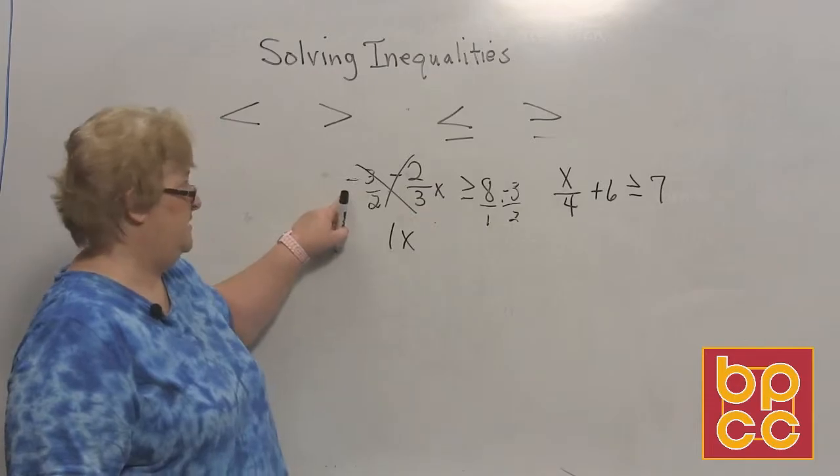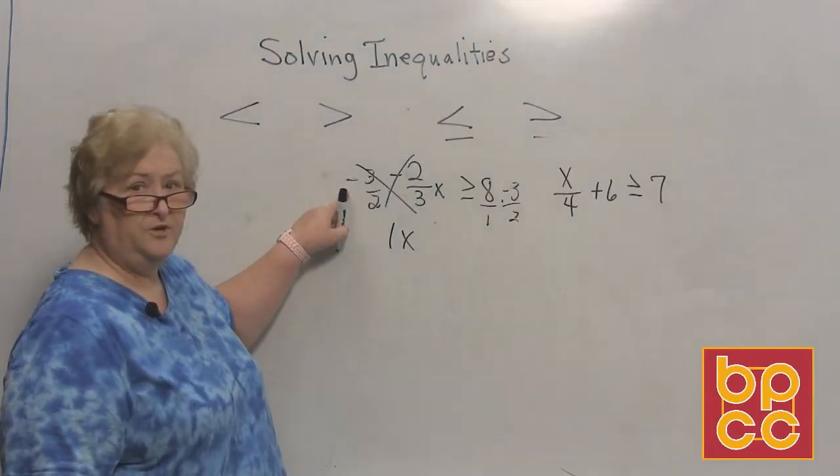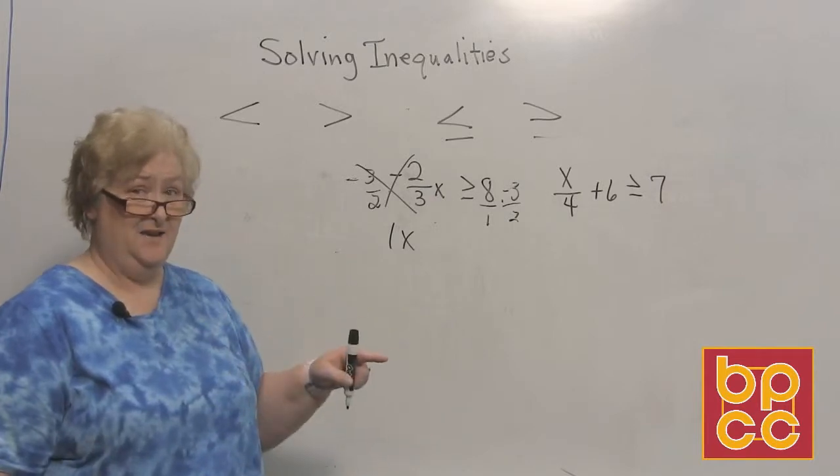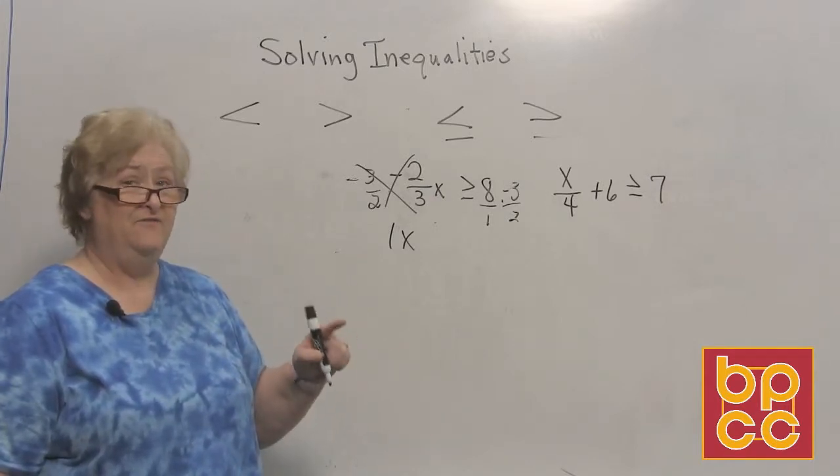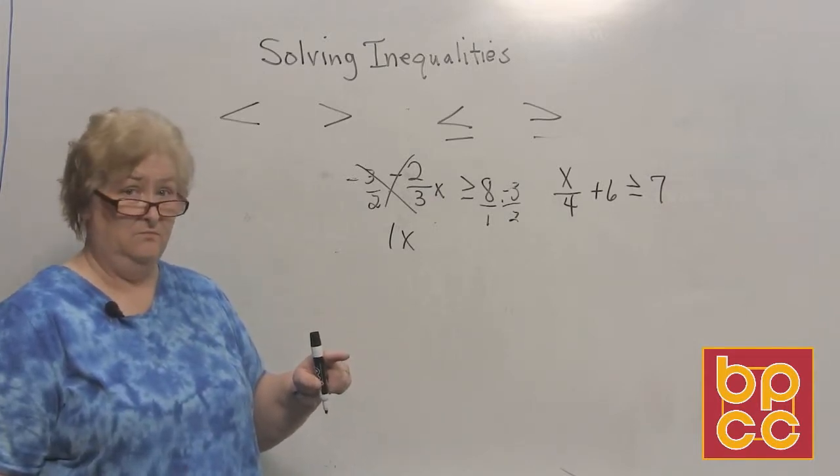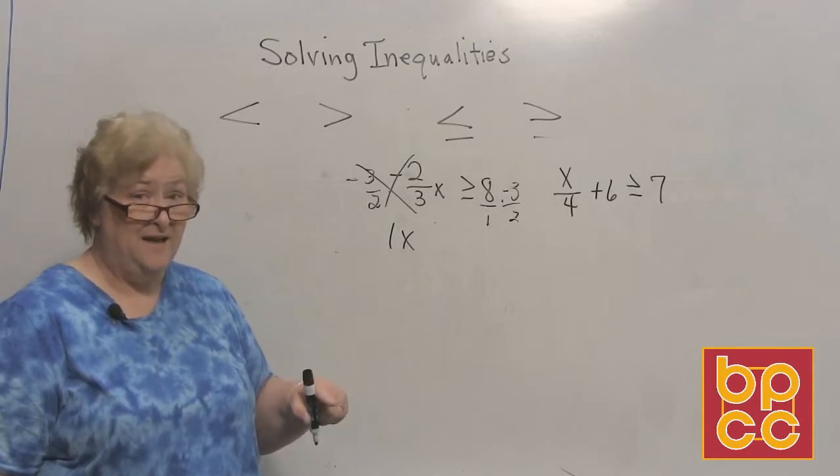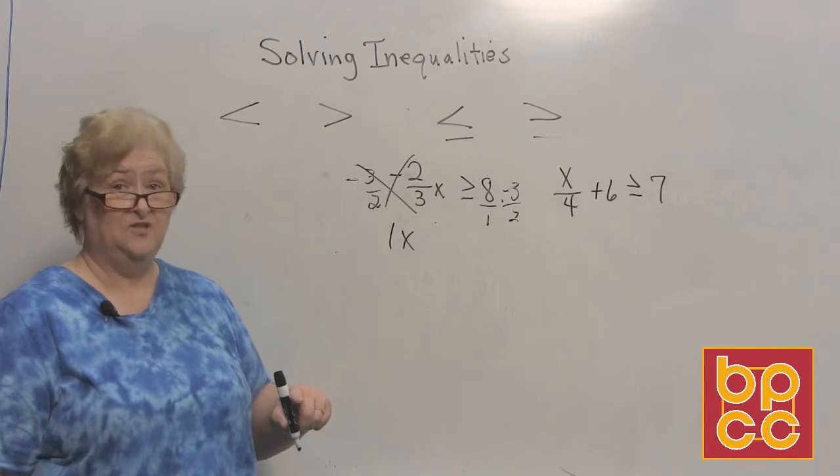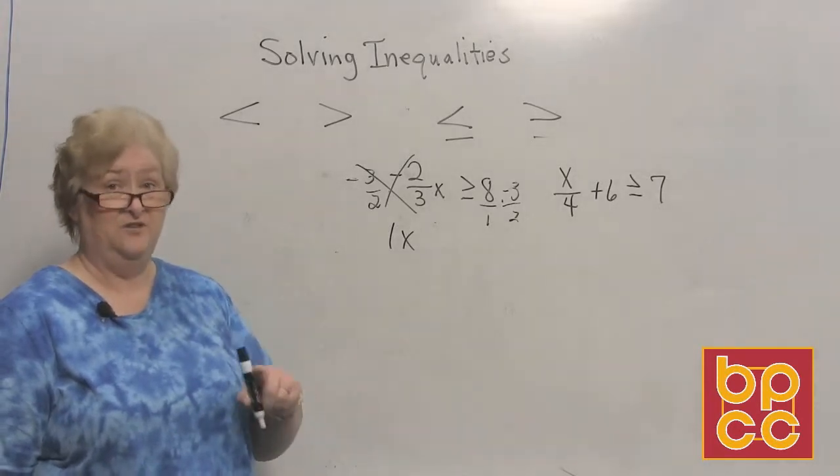Uh-oh, wait a minute, rule number 2. We just multiplied by a negative to make that variable turn positive, didn't we? Well, if you divide by a negative to make it positive, then when you multiply by a negative to make it positive, you've got to change the sign. So there's rule number 2.